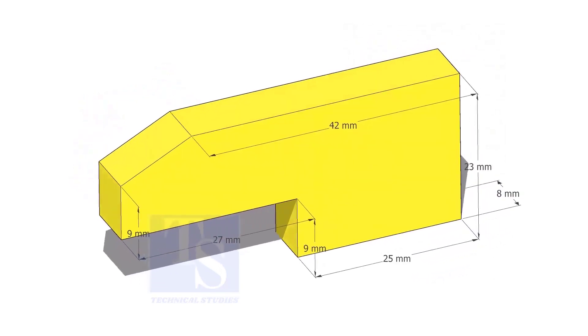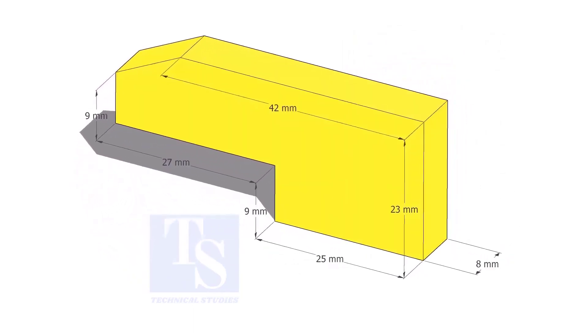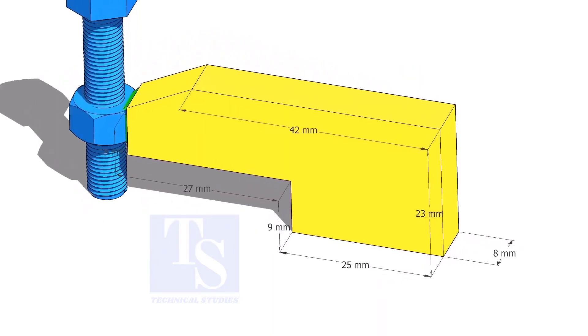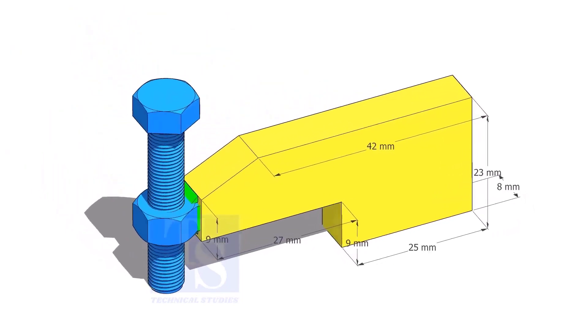Cut L shapes as per the given dimension. The link of this drawing is given in the description. Up to 4 inch pipes, you can use 10 mm thick plates. For 6 inch and above pipes, 12 mm to 16 mm thick plates are enough.